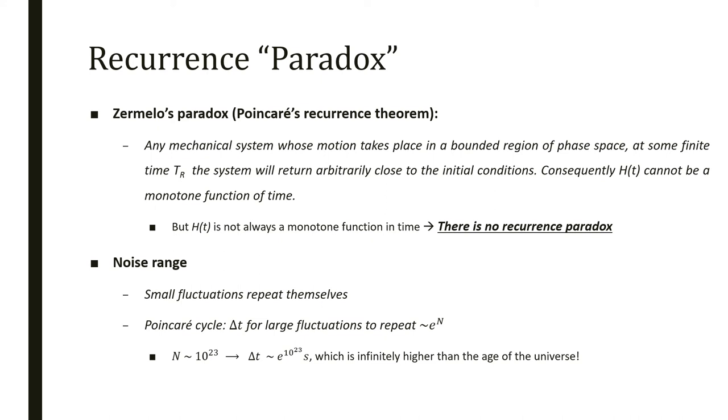We can move to the second question, Zermelo's paradox, which is based on Poincaré's recurrence theorem. Poincaré's theorem says that any mechanical system whose motion takes place in a bounded region of space, after some finite time, the system should return arbitrarily close to the initial conditions. So Zermelo said that by this, H cannot be a monotone function of time. However, we've just seen on the last slide that H is not always a monotone function of time, so there is no paradox at all here. This actually only shows how the theorem was misinterpreted by some physicists at the time.